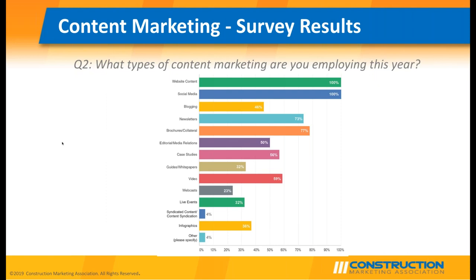Looking at the types of content marketing being used: everyone is using website content and social media. The next largest content type is brochures, collateral, and catalogs, followed by newsletters, video, case studies, and blogging. Further down are syndicated content, infographics, and other categories including sales calls and surveys.